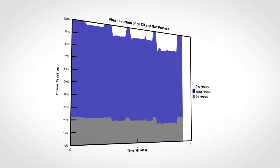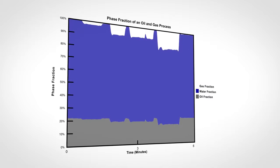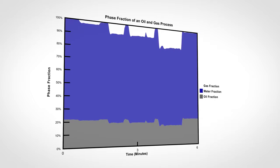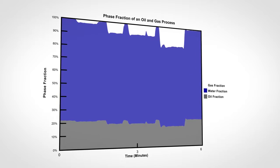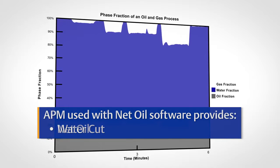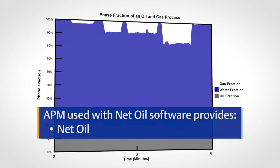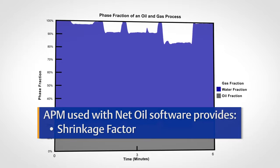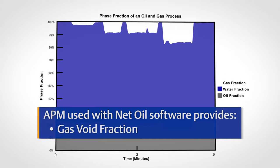When used with the net oil computer software, advanced phase measurement is able to provide water cut, net oil, shrinkage factor, and gas void fraction.